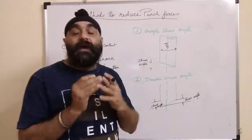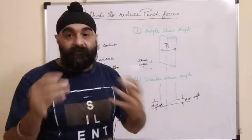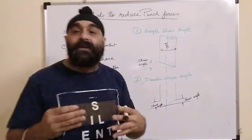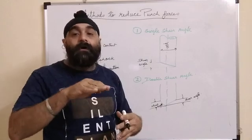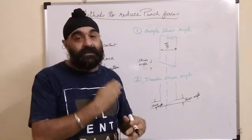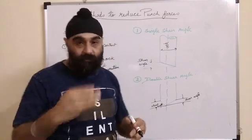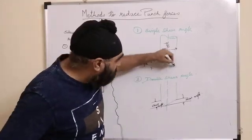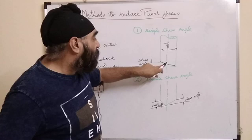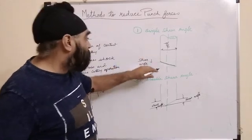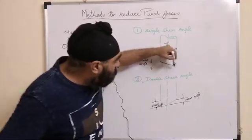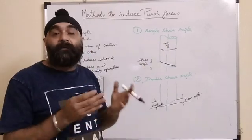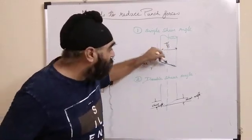After buying the punch from your supplier or making the punch, you can grind it to some angle. If this shear angle is given, the punch will gradually contact the sheet and the cutting force will be reduced. At a time, point of contact will reduce.